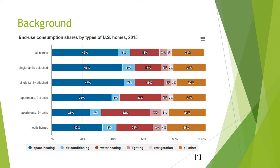By excluding the categories that are not applicable, 16% should cover air conditioning, 16% should cover lighting, 12% should cover refrigeration, and 56% should cover all of the electronic devices.